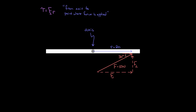We can find that perpendicular component. If this angle was 30 degrees, by alternate interior angles this is also 30 degrees. That means the perpendicular component — the opposite side to 30 degrees — equals 10 Newtons times sine of 30, which is five Newtons. So finally, the torque exerted on this door by this 10-Newton force at 30 degrees is the perpendicular component of five Newtons times the distance of two meters, giving a torque of 10 Newton-meters.